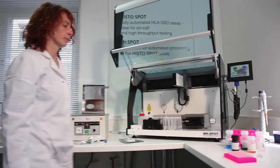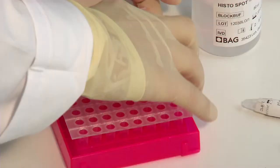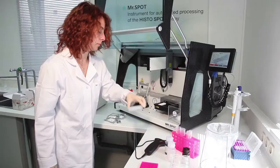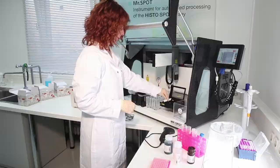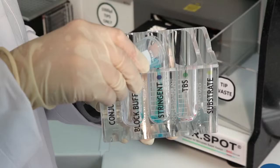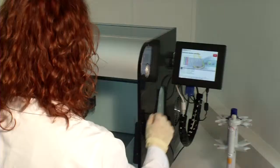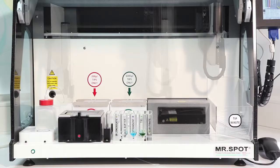Now you have to prepare and start the Mr. Spot processor. To do this, simply follow the instructions on the touch screen. Place the amplicons in the sample block and put the required SSO test wells into the reaction plate holder. Then fill the reagents into the trough. Now you can start the run.